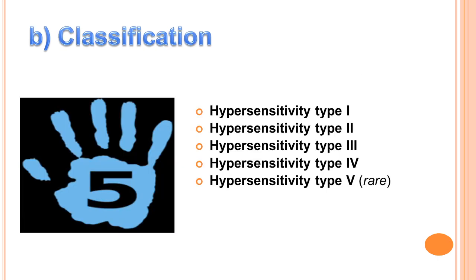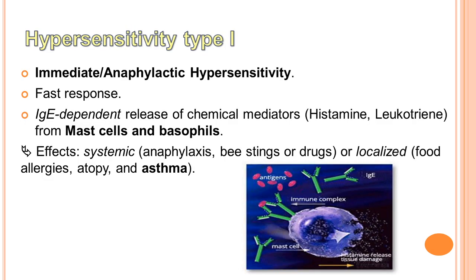Next is the classification part. We can divide hypersensitivity into 5 types: Type 1, 2, 3, 4 and 5, with type 5 being rare. The hypersensitivity type 1, or immediate or anaphylactic hypersensitivity, is characterized by a fast response which occurs in minutes. Tiếp theo là phần phân loại. Có thể chia phản ứng quá mẫn thành 5 loại. Phản ứng quá mẫn loại 1 còn được gọi là phản ứng quá mẫn tức thì hay phản ứng quá mẫn phản vệ. Nó đặc trưng bởi phản ứng nhanh trong vài phút.